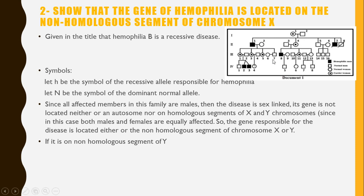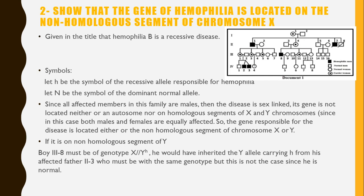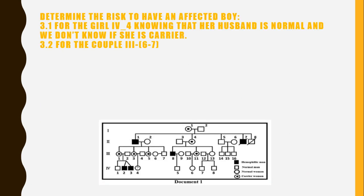If the gene were on the non-homologous segment of chromosome Y, affected male 38 would have genotype XY^H. He would need to inherit the Y^H chromosome from his father, individual 23. But his father is normal, so his genotype is XY — he doesn't carry Y^H to pass on to his son. This contradiction rules out the Y chromosome hypothesis, confirming the gene of hemophilia is located on the non-homologous segment of chromosome X.